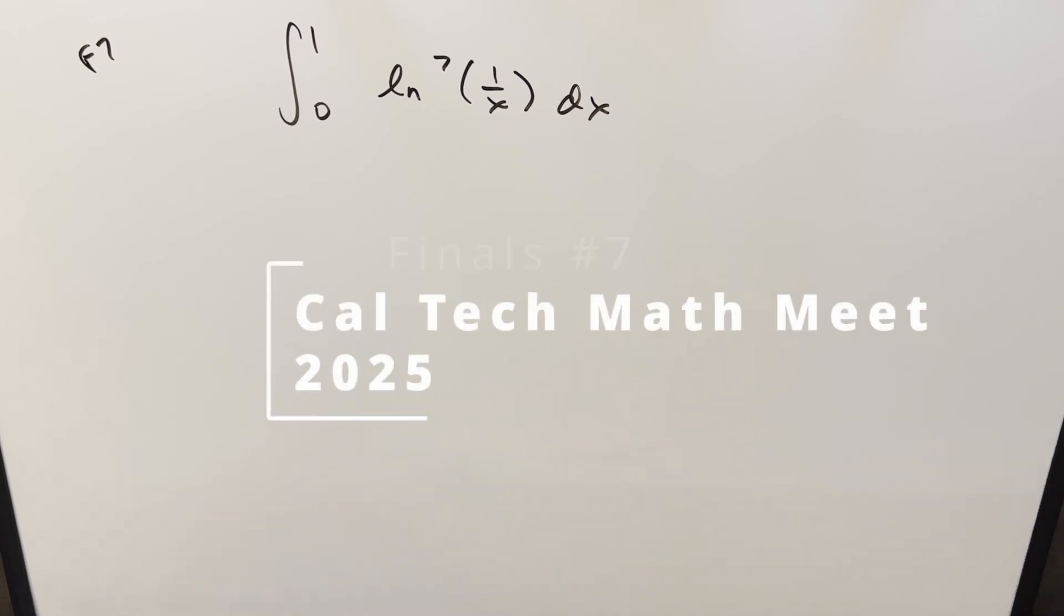Okay, we have an integral from the Cal Math Meet finals number 7. We've got the integral from 0 to 1, natural log 1 over x all to the 7th dx.